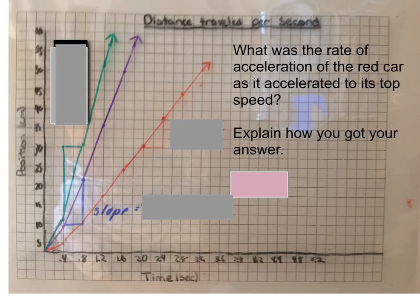And here's the free response question that I'd like you to answer also in that Google Doc. What was the rate of acceleration of the red car as it accelerated to its top speed? And so I'd like you, in the Google Doc form, to explain how you got your answer. Show your work and explain. And the last question you'll see in that Google Doc form is, what questions do you have from this lesson? And we can talk about your questions tomorrow. Alright scholars, thanks for tuning in. I'll see you in class.